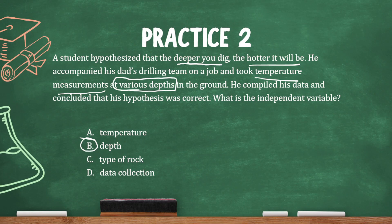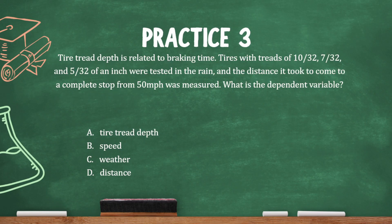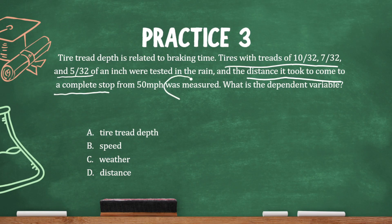Tire tread depth is related to braking time. Tires with treads of 10/32nds, 7/32nds, and 5/32nds of an inch were tested in the rain, and the distance to come to a complete stop from 50 miles per hour was measured. What is the dependent variable? The independent variable is the depth of the tire tread — there are three different tire treads. The effect is the distance to come to a complete stop, and that's also what's being measured. So the dependent variable is the distance.